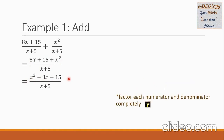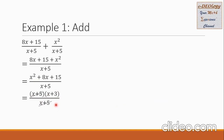Let us factor out the numerator and the denominator completely. The numerator can be factored into x plus 5 times x plus 3. The denominator is already simplified, so we copy it down. We can see that x plus 5 is common to numerator and denominator, so we can cancel it out. Only x plus 3 remains. So this is our final answer.